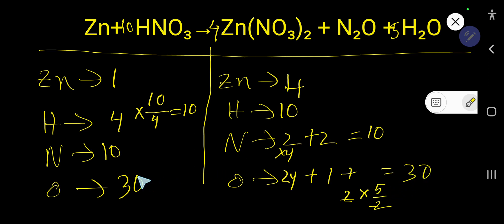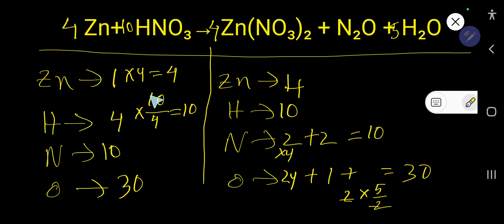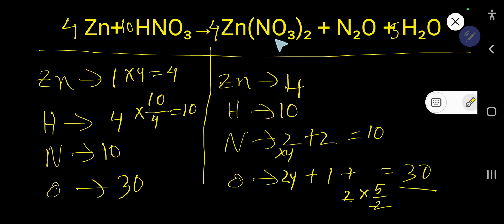Now look — here we have 1 zinc on the left but 4 zinc on the right. To balance zinc, multiply Zn by 4, that gives 4. This 4 must come before zinc. So now: 4 zinc equals 4 zinc, 10 hydrogen equals 10 hydrogen, 10 nitrogen equals 10 nitrogen, 30 oxygen equals 30 oxygen. Everything is balanced. This is the balanced chemical equation. This is actually the hardest one. Thank you for viewing this video. Be well.